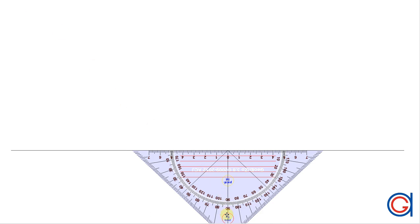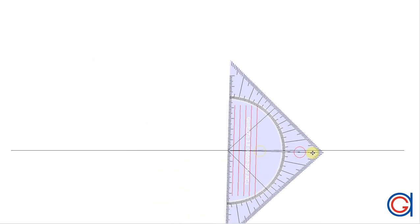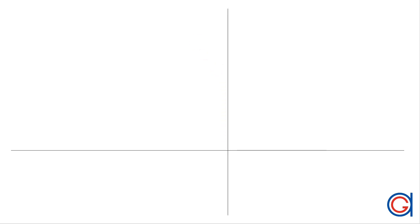The first step is to draw an XY axis. First we draw a horizontal axis, and next we draw the vertical axis slightly to the right of center, as can be seen here in the video. They will cut each other at a point that we will call O, the origin.